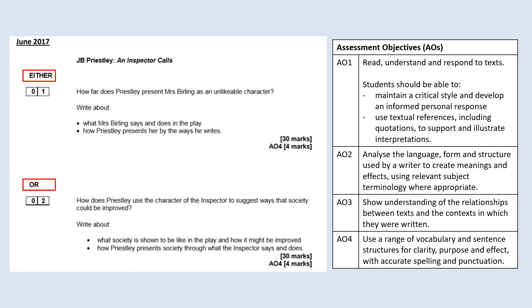Here on the left is an example of the kind of question that has been given in the past by the GCSEs. This is from June 2017. The first question asks: how does Priestley present Mrs. Birling as an unlikable character? Or students can answer the second question, which asks: how does Priestley use the character of the inspector to suggest ways that society could be improved?